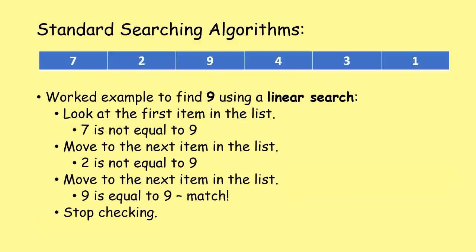Worked example: find the item nine in this list using a linear search. We look at the first item: seven. Seven is not equal to nine, so we move along. Next item is two. Is two equal to nine? No. Move along to the next item. Nine is equal to nine - we found a match. We can stop checking.